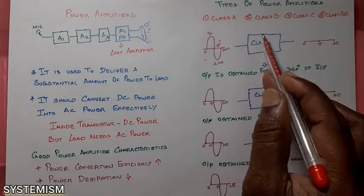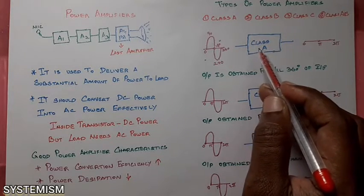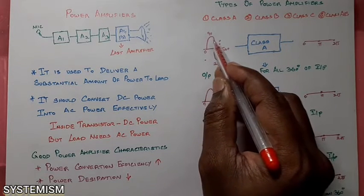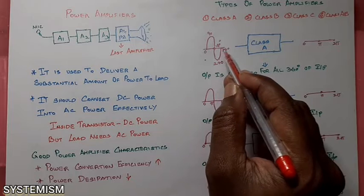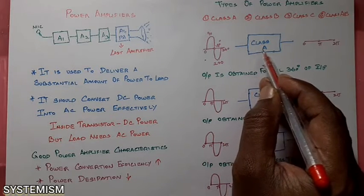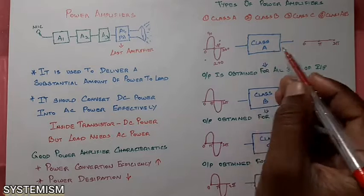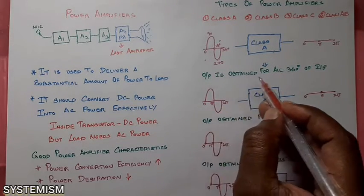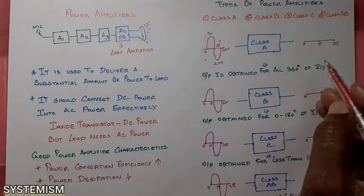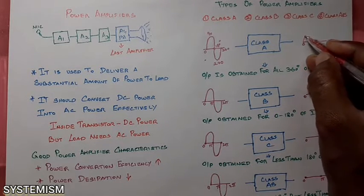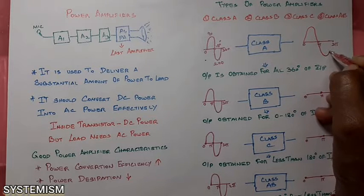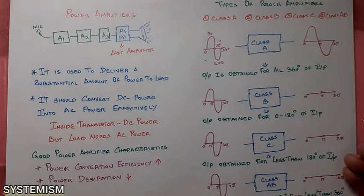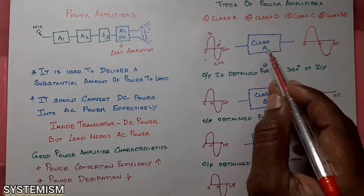We will take a class A amplifier. In this class A amplifier, if we provide an input signal — 0, 90, 180, 270, and 360 degrees — this class A amplifier will provide output for all 360 degrees of your input signal. Output is obtained for all 360 degrees of your input signal. So the output will be the amplification for all 360 degrees. This type of amplifier is called a class A amplifier.